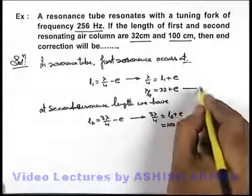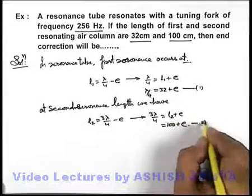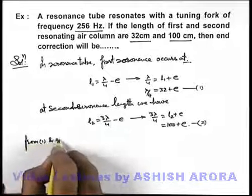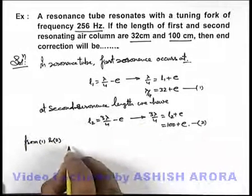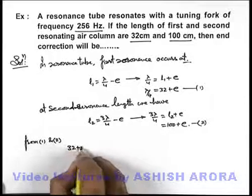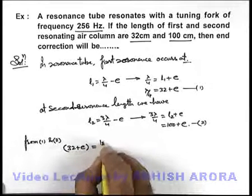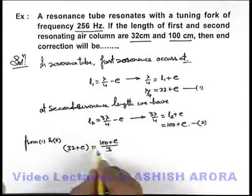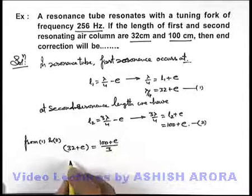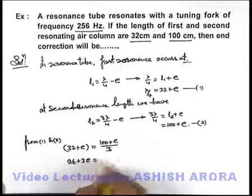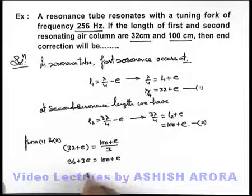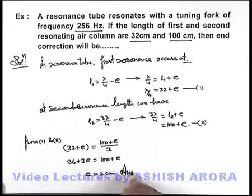And from these equations, if it is equation one and this equation two, then we can simply write from one and two - here we can write that 32 plus e is equal to 100 plus e by 3. We simplify the expression, this will give us 96 plus 3e is equal to 100 plus e. On further solving we get e is equal to 2 centimeters. That will be the answer to this problem.